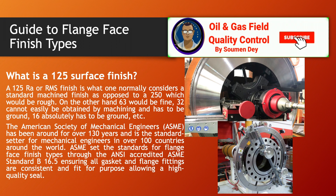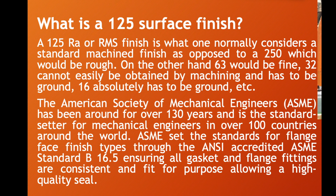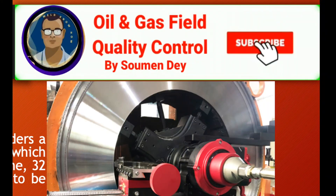How do we generally designate a flange face surface finish? For example, a 125 Ra or RMS finish is what one normally considers a standard machined finish. A 250 would be rough; 63 would be fine; 32 cannot easily be obtained by machining and has to be ground; 16 absolutely has to be ground. ASME has been around for over 130 years and is the standard setter for mechanical engineers in over 100 countries. ASME sets the standards for flange face finish types through the ASME standard B16.5, ensuring all gaskets and flange fittings are consistent and fit for purpose, allowing a high-quality seal.